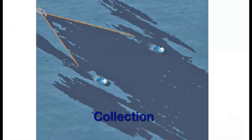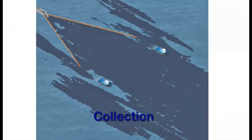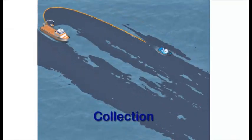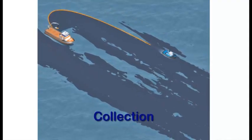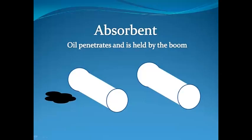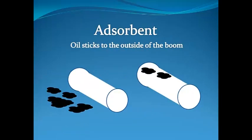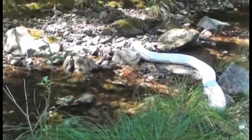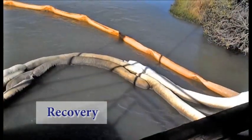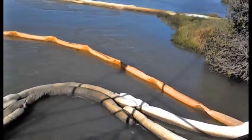Collection means towing boom behind a boat in a V shape, a U shape, or J shape through or around a slick, gathering oil for recovery or burning. Absorbent is when a substance penetrates and is held in by the boom. Adsorbent is when oil sticks to the outside of a boom. Recovery is the process of placing boom where it will contact floating oil and absorb it or adsorb it.